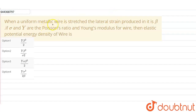Our question is: when a uniform metallic wire is stressed, the lateral strain produced is beta. If sigma and Y are the Poisson's ratio and Young's modulus of the wire, then what is the elastic potential energy density of the wire? So we have a uniform metallic wire which is stressed, the lateral strain produced is beta, and we need to find the potential energy density.